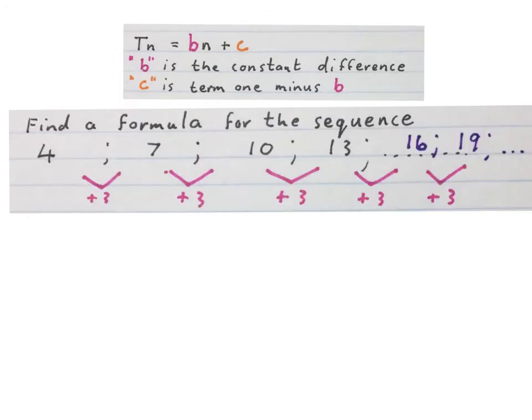Here we go, they say find a formula for this sequence. We already worked out that the constant difference is plus 3. If they ask me to add in any more numbers, I plus 3 to 13 and get 16, and plus 3 to that again to get to 19.